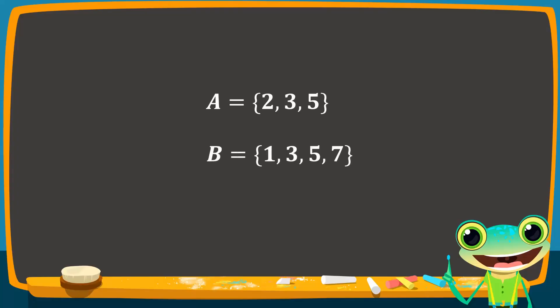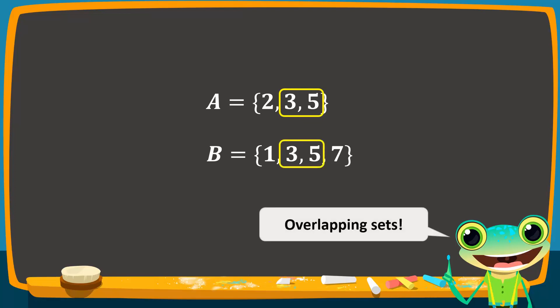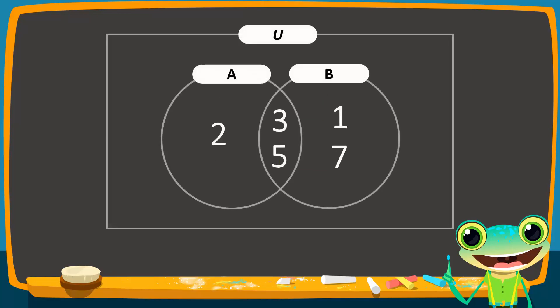Consider these two sets. Set A contains the numbers 2, 3, and 5, while set B contains the numbers 1, 3, 5, and 7. Since 3 and 5 are common to both sets, these sets are overlapping and their circles overlap partially in a Venn diagram.